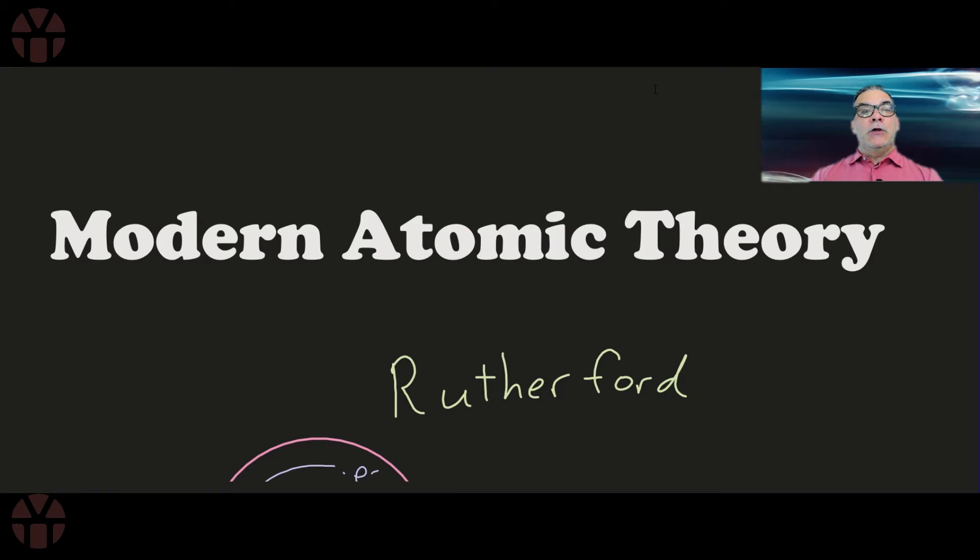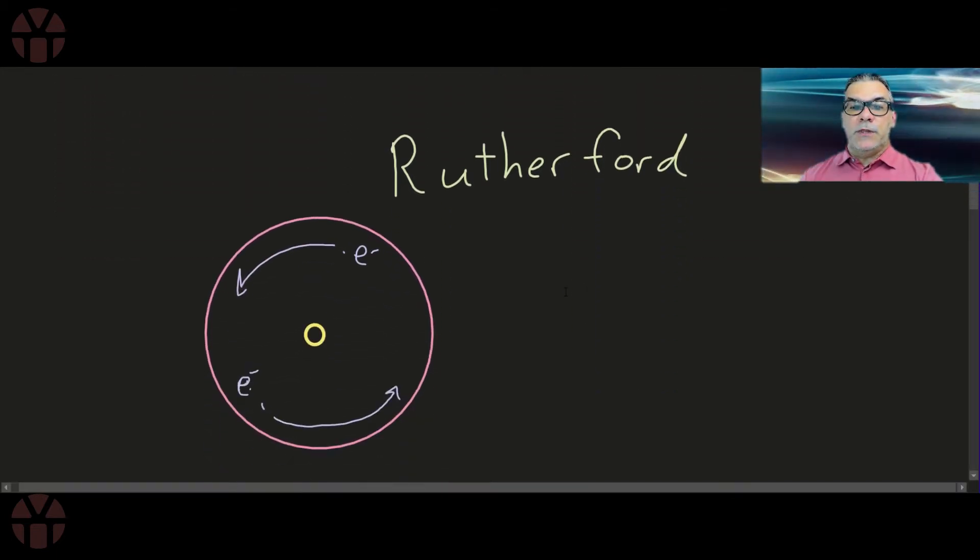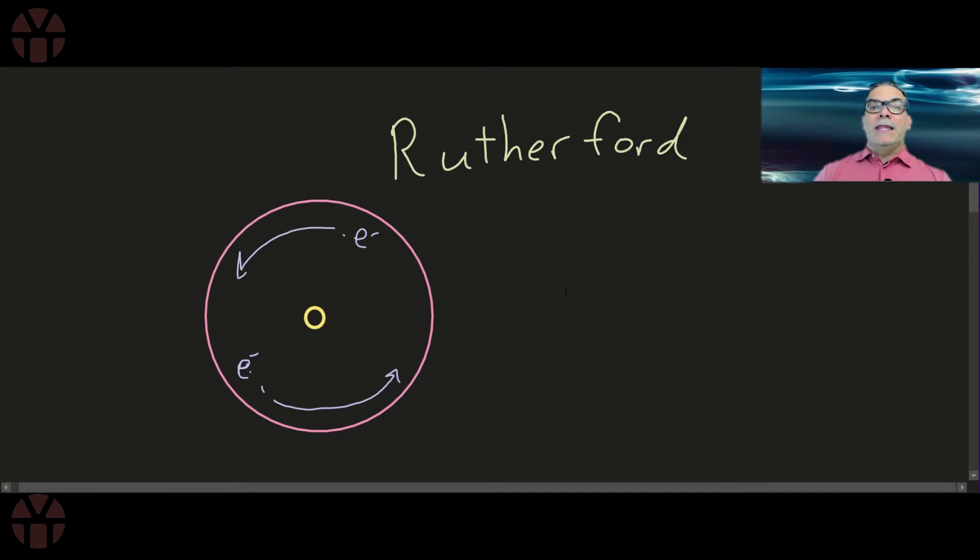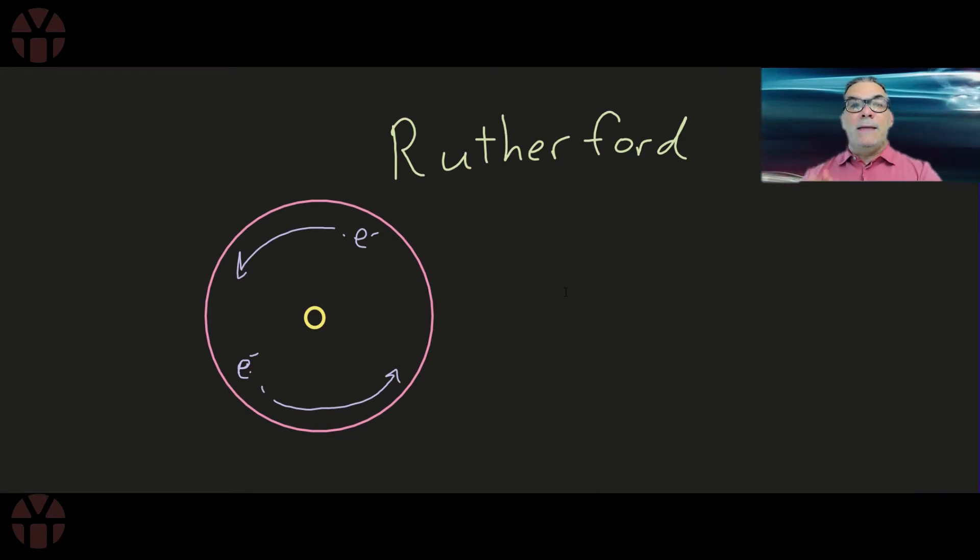So we're going to start by looking at this idea of modern atomic theory. We're going to refresh our memory with things that Rutherford and Thompson spoke into, and we're going to see how we evolve the concept of the atom from the simple model that Rutherford left us with, where we had the electrons spinning around a nucleus, to the modern day model of the atom that is known as a probability or electron cloud model.